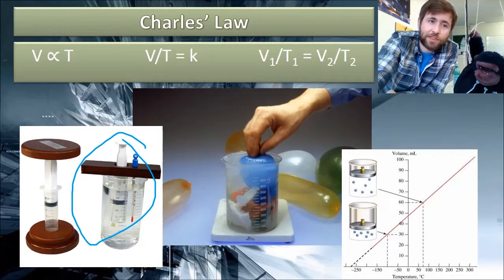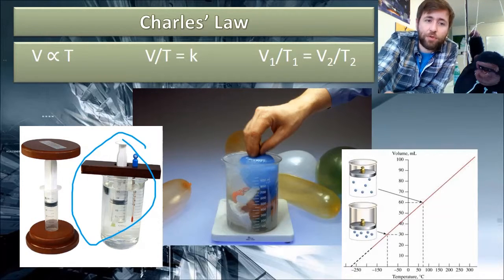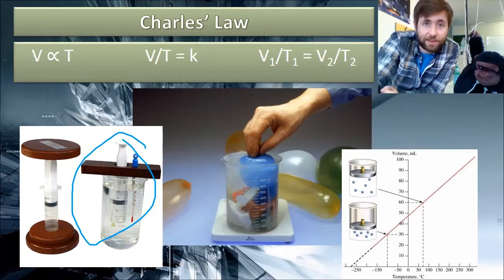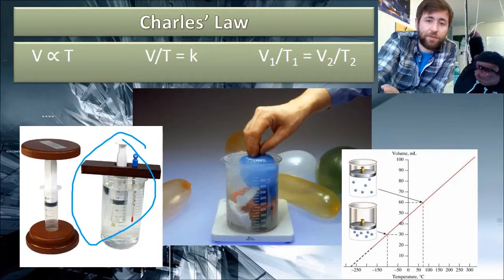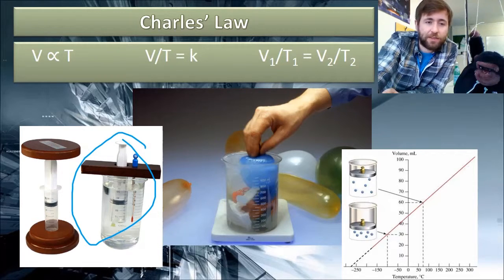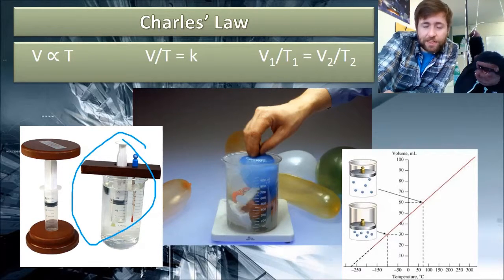Because Charles' Law says that volume and temperature are proportional, and that is if pressure is fixed. So pressure is a difficult thing to fix, as you've just seen, but if you could fix the pressure, then that's what you will get.